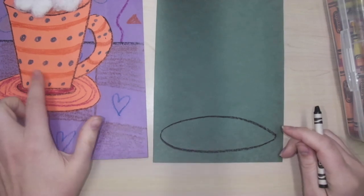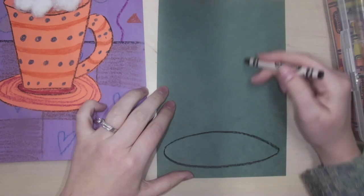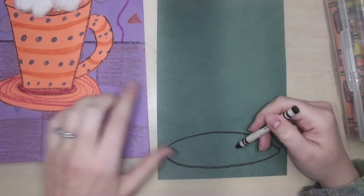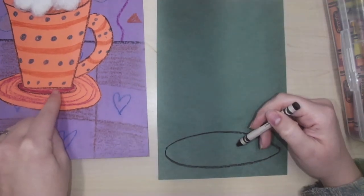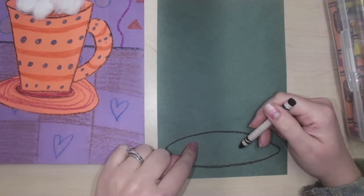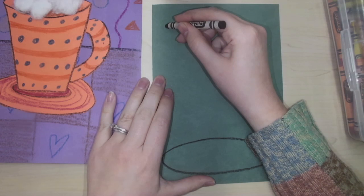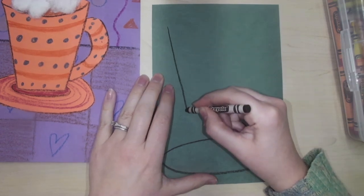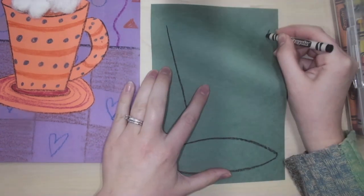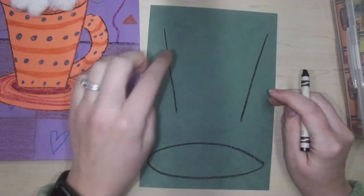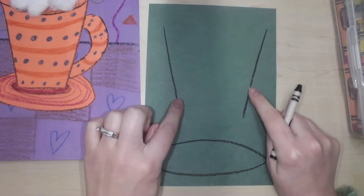Now we're going to draw the mug. The mug should be above the plate. They're not going to touch. We're actually going to glue them together later, so we're going to draw them separate. To draw our mug, we're going to do two long diagonal lines on the side of our paper. Look how the two lines point inward.